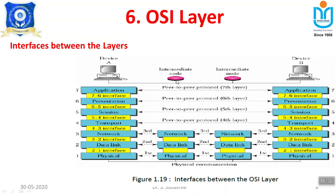A router uses the functionality of 3 layers — Physical, Data Link, and Network (for routing packets). Other layers perform individually. For example, the session layer on the sender side encrypts the information, converting plain text into cipher text. On the receiver side, the session layer decrypts it — converting cipher text back into plain text — to present readable data to the upper layer. Each and every layer has its own independent functionality.